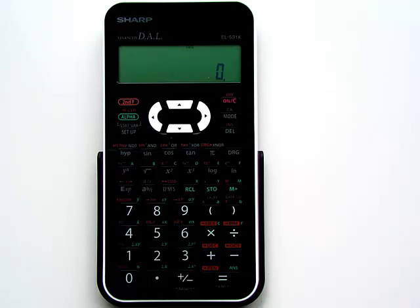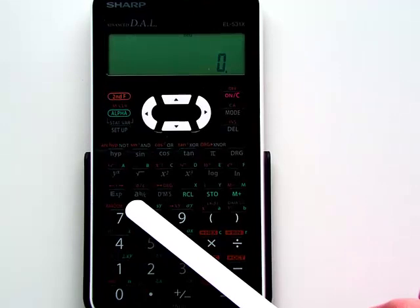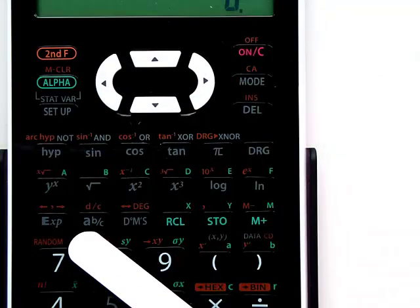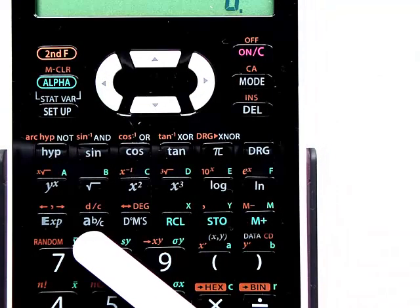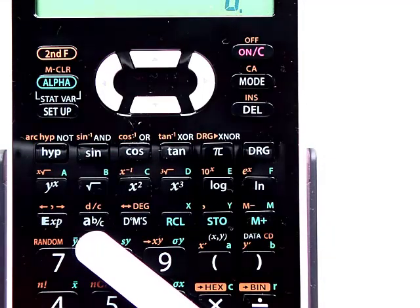In this video, we're going to look at the fraction key, which appears directly below the square root key on your calculator. It has a somewhat confusing label, A B/C. That's your fraction key, and we're going to look at how to use it.